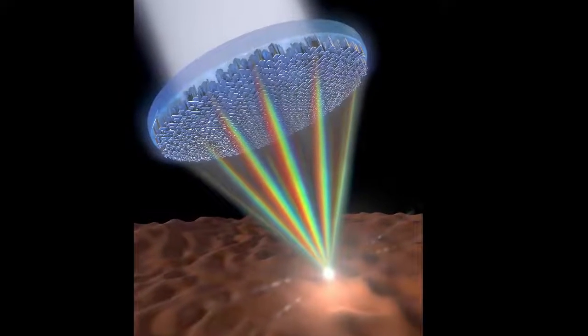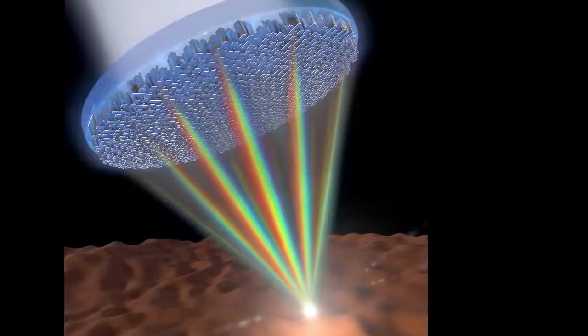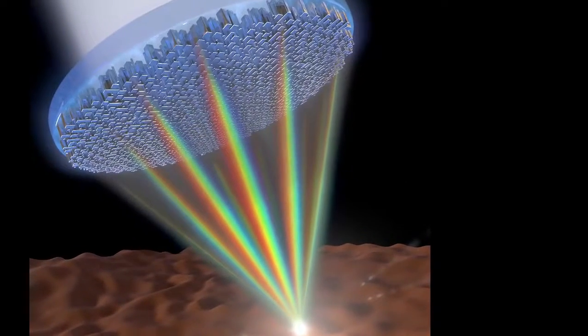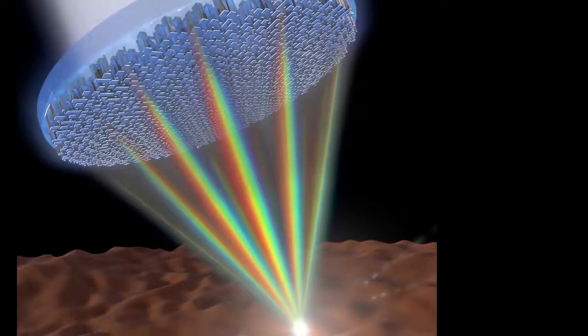Meta lenses, i.e. flat surfaces that use nanostructures to focus light, promise to revolutionize optics by replacing the bulky curved lenses currently used in optical devices with a simple flat surface.